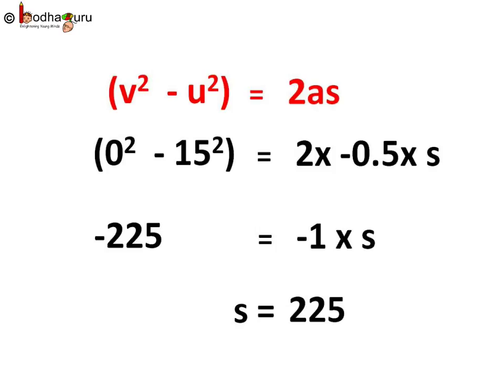We can use s equal to ut plus half at squared as we know u, a, and t. But if we did not calculate t, we could directly use v square minus u square equal to 2as. So let us use it.